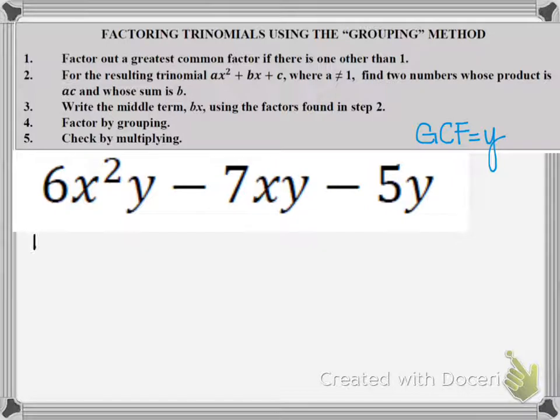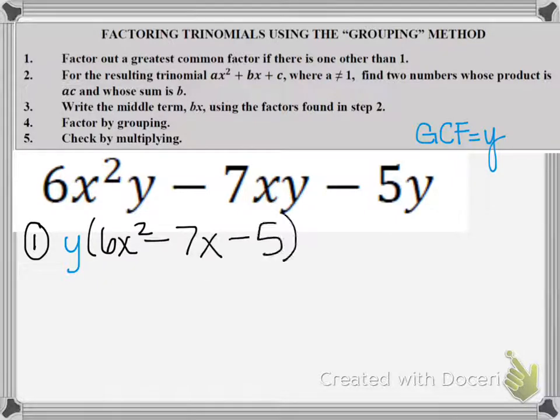So what I'm going to do for step 1 is I'm going to factor out a y from each term of this trinomial. It's going to leave behind 6x squared minus 7x minus 5. So now I'm done with step 1.